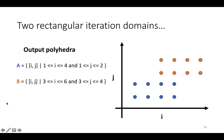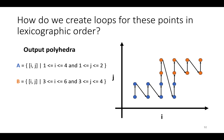The challenge is: given this group of output polyhedra representing all of the points in multi-dimensional time at which statements execute in the new schedule, we've got to emit for loops that walk over these points in lexicographic order. The arrows indicate lexicographic order, so we'd start at the point i=1, j=1 and execute that, then continue through all points.